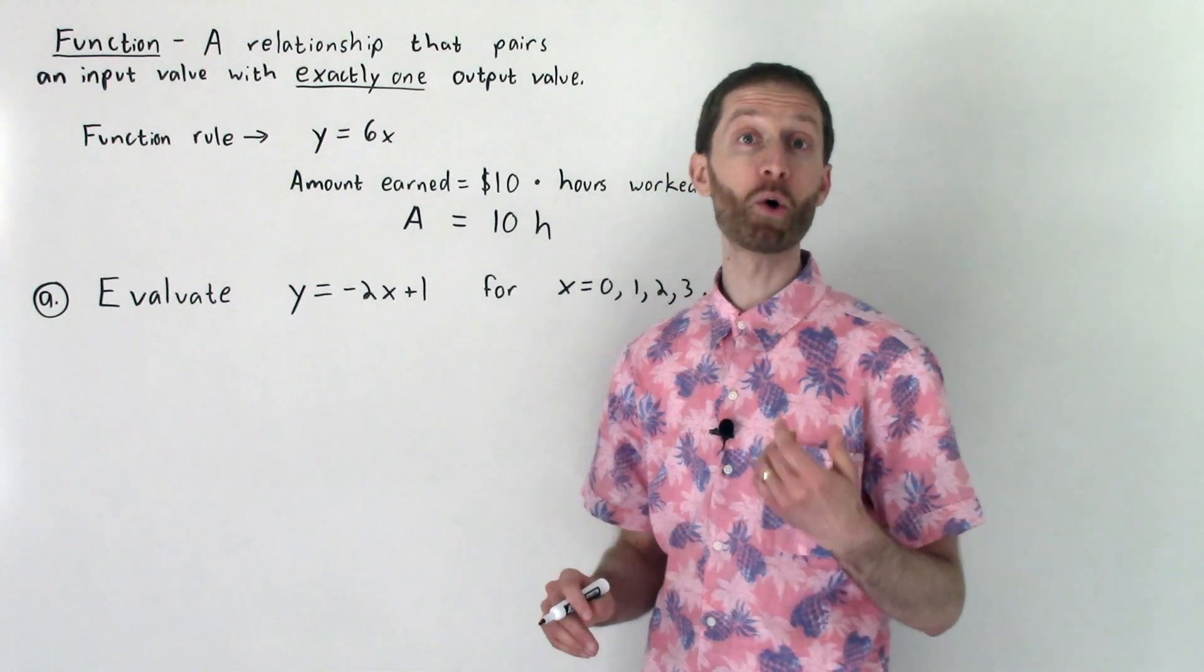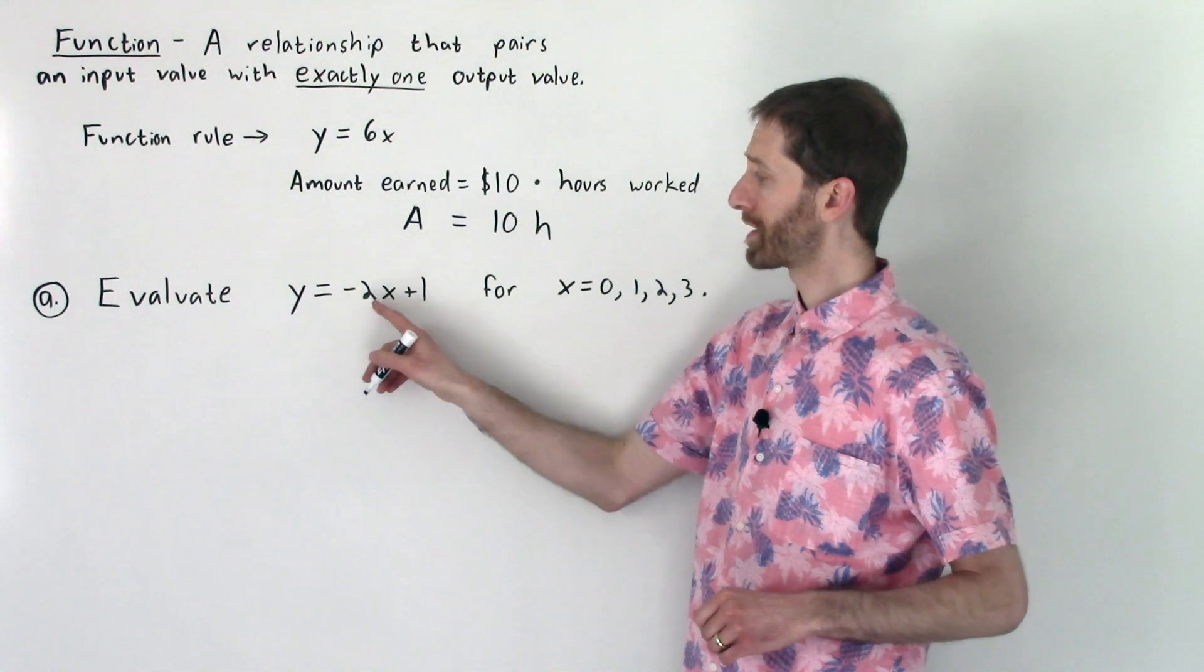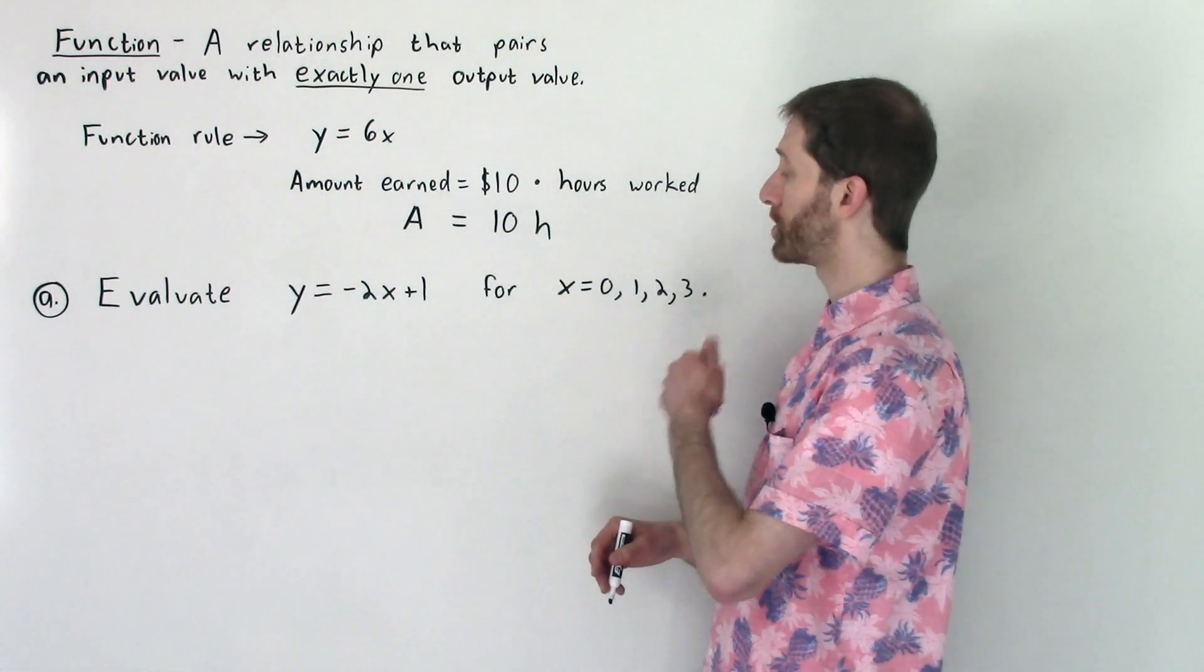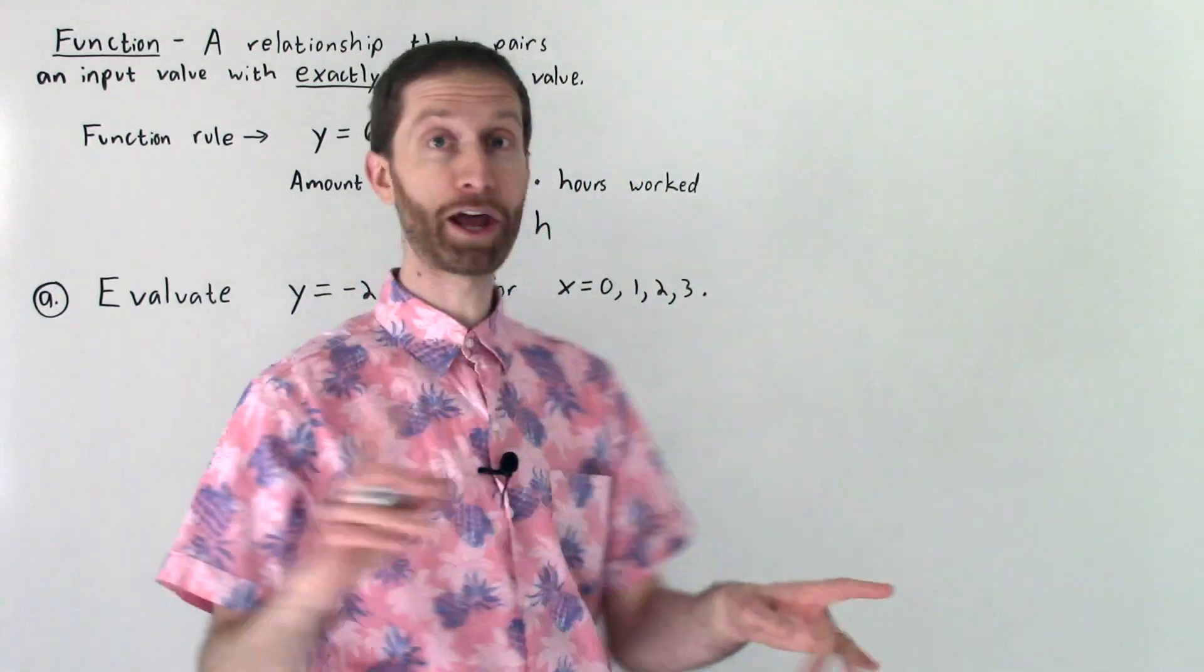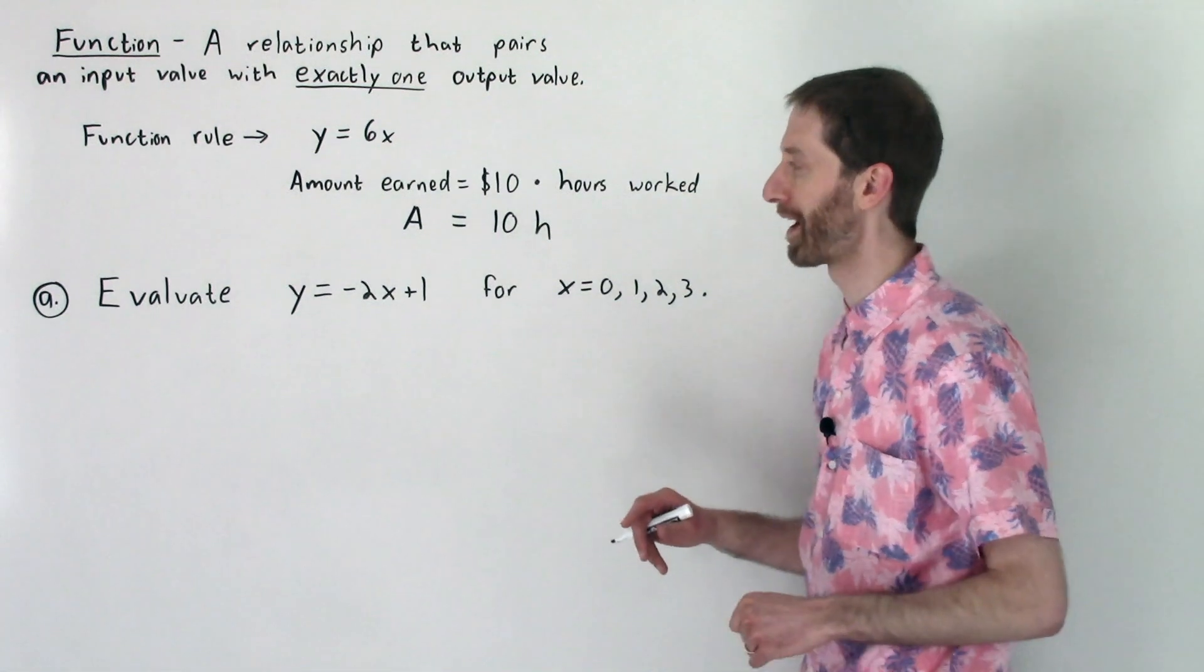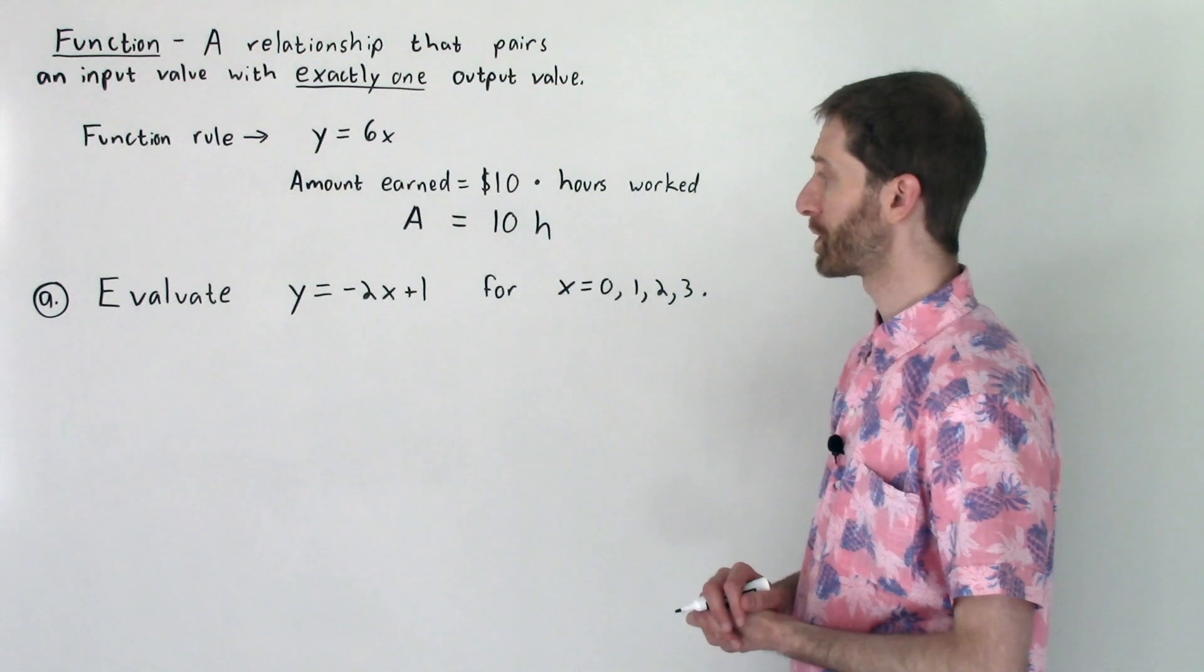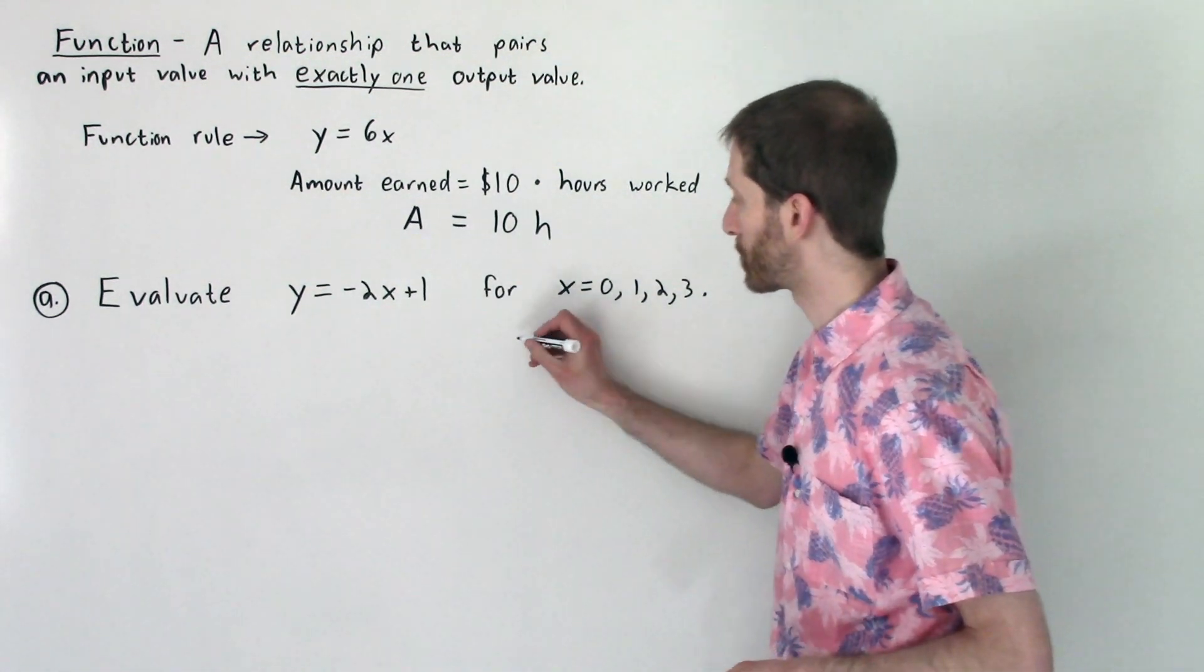So here we are now going to do what's called evaluate function rules. So it says evaluate y equals negative 2x plus 1 for x equals 0, 1, 2, and 3. Okay, how do we do that? It's not so bad. So to evaluate, that literally just means plug in. A lot of people like to organize themselves with tables. I'm going to show the work to the left and then we can put everything to the table to the right here.